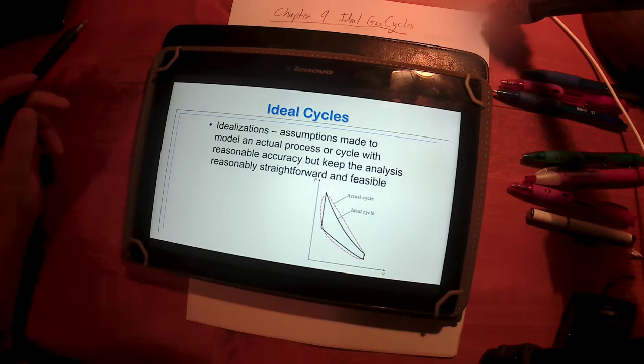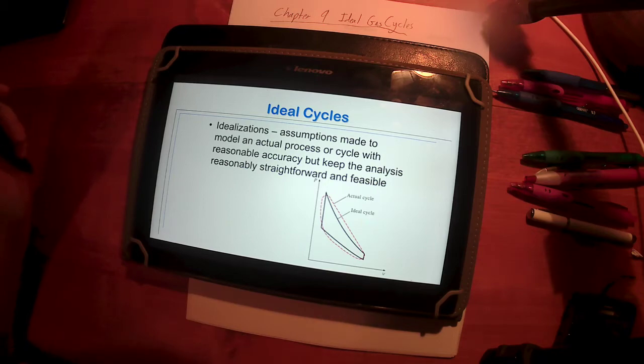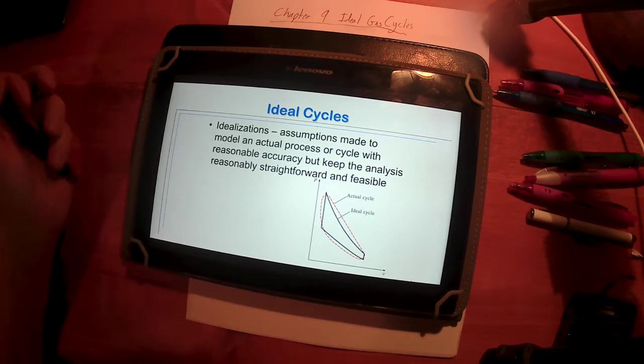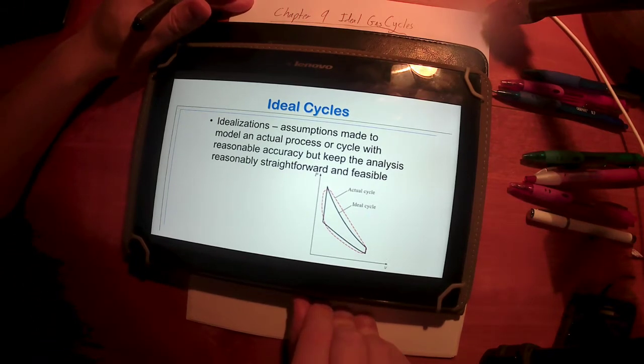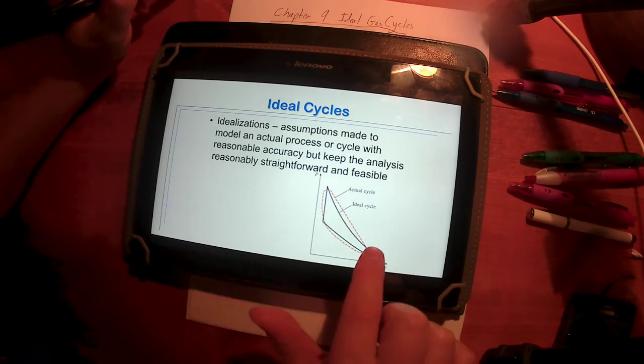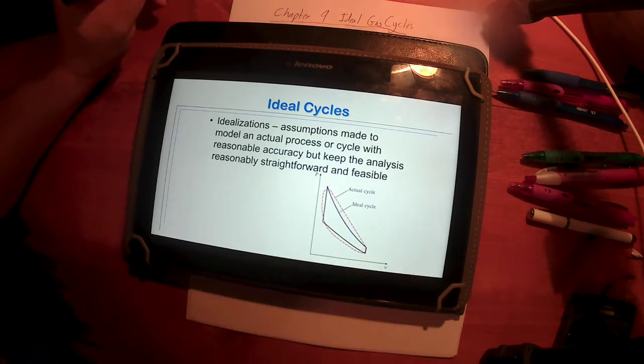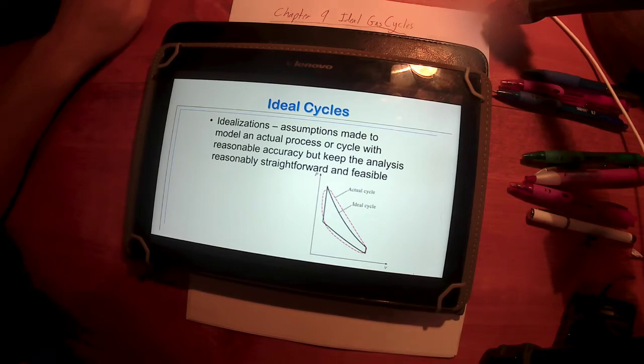What happens then is we end up identifying or putting together some other ideal cycles that mimic types of engines or cycles that do exist, that we do have the technology to operate. Now, these are what we call ideal cycles. Ideal cycles are cycles that have idealizations. And what that means is there are assumptions that we can make to simplify the analysis. And this diagram is in your text. What is meant by that is, for example, I've got an actual cycle here in this dotted line, and you've got an idealized cycle that is very close in shape and size, but not exact.